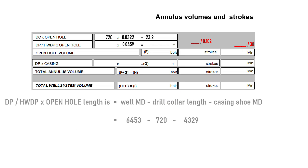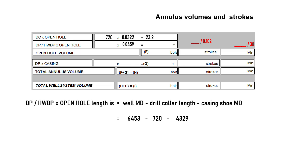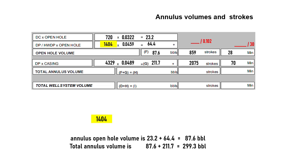Length of drill pipe and heavy weight in the open hole is equal to well MD minus drill collar length minus casing shoe MD. In this example we get 1404 feet. Then we calculate the volume by multiplying each section by the corresponding annulus capacity for drill collar, pipe in open hole, and pipe inside casing.